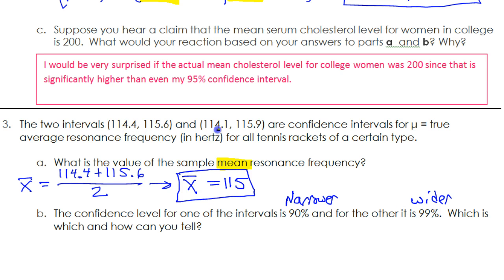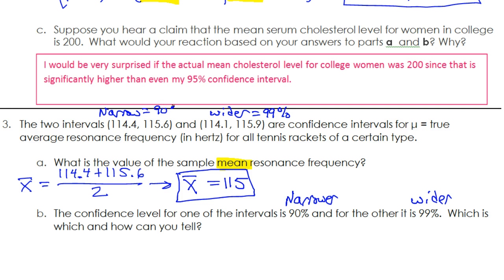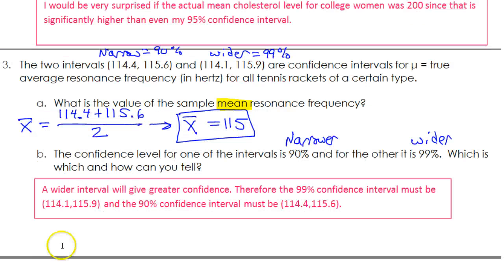So let's see. This one is wider because it goes down to 114.1 — that's lower — and it goes up to 115.9 — that's higher. So this is wider, so it must be the 99% confidence interval. This one is narrower, so it must be the 90%. A wider interval will give greater confidence. Therefore, the 99% confidence interval must be this one and the 90% confidence interval must be this one.